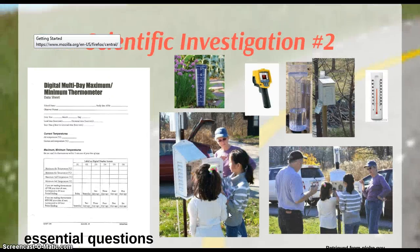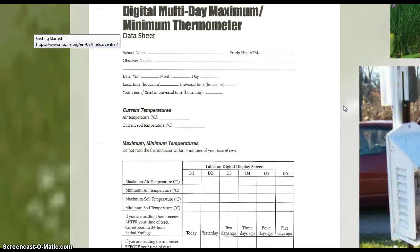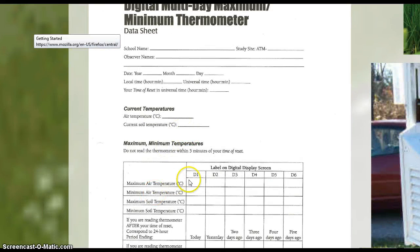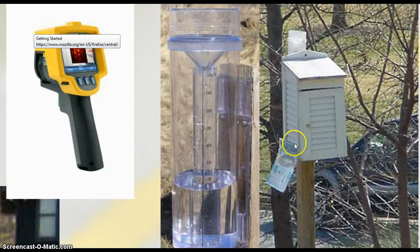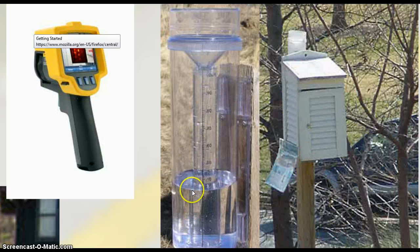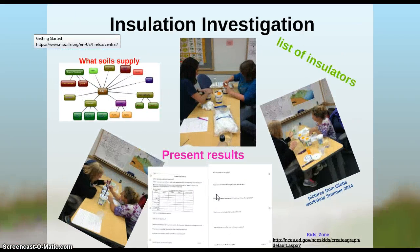Scientific Investigation Number Two deals with our actual weather station. We have a digital multi-day maximum-minimal thermometer. We'll take readings for a week and continue throughout the month, then transition to journals so we don't need the worksheet anymore. The weather station has one thermometer that goes into the soil and one in the air, plus a rain gauge to keep track of precipitation.